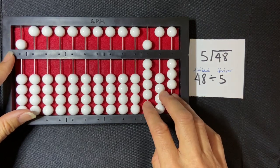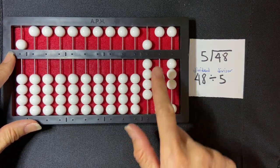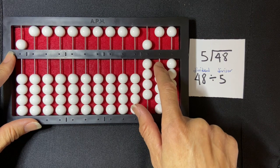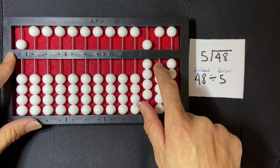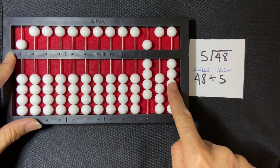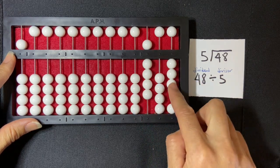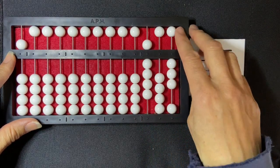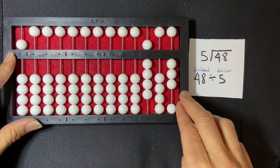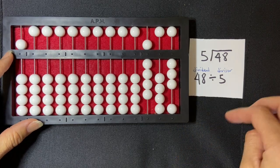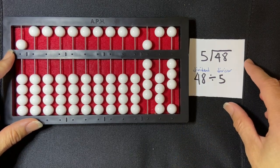And I get my quotient, which is 9. And then this rod is skipped, as we say, remainder 3. So my quotient is 9, remainder 3. The remainder is written on that last rod there. And that is a counting method division problem.